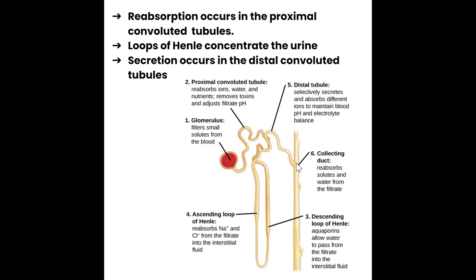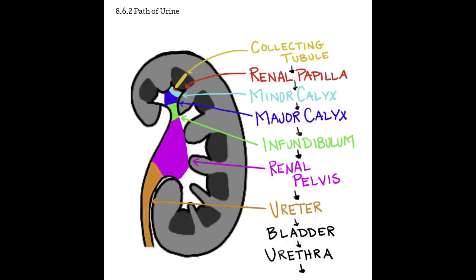The collecting duct takes back some water and balances how much the body needs to get rid of versus keep. From the collecting duct, filtrate heads into the collecting system. The collecting tubules in the medulla head toward the apex of the medullary pyramids — the renal papilla — where urine enters the minor calyx. Minor calyces join to form major calyces, which join to form the infundibulum. The infundibula empty into the renal pelvis, the renal pelvis connects to the ureter, and the ureter heads down to the bladder, and we eventually pee it out through the urethra.